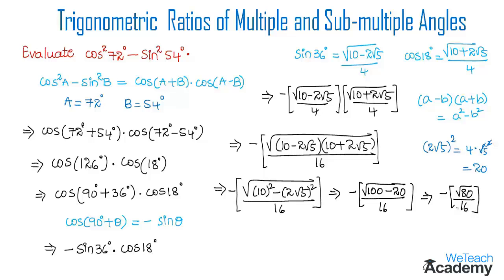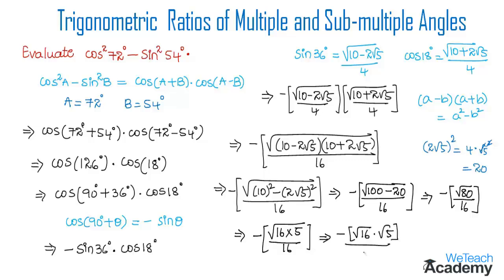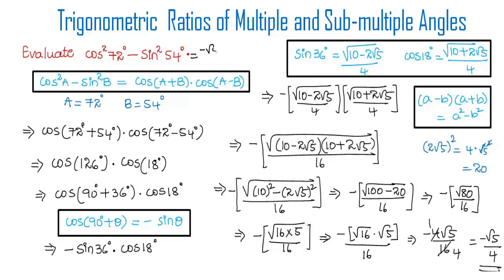Here √80 can be written as √(16 · 5). So we get -√(16 · 5) / 16 = -(√16 · √5) / 16 = -(4√5) / 16. Simplifying, 4 divides into 16 four times, giving us -√5 / 4 as the result for cos²72° - sin²54°.